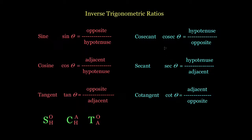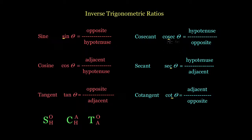On the right-hand side, creating a similar mnemonic is tricky because we have a repeating 'C' at the start of cosec and cot. But what we can do is look at the third letter of each of these new ratios to find the relationship. For cosec, the third letter is 'S', which tells us it's directly related to sine — sine is opposite over hypotenuse.